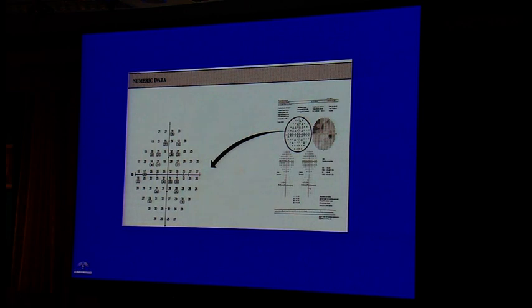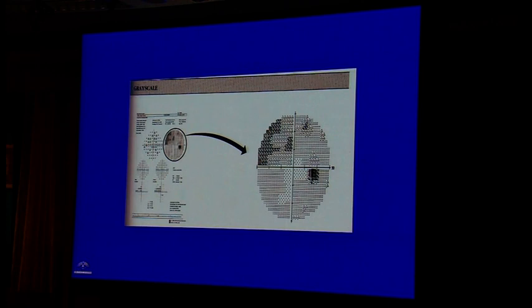Retinal sensitivity is best at the fovea, measured at around 32 dB, and declines towards the periphery. The grayscale interpolates the raw numeric data to map areas where the visual field appears defective, giving a rough visual representation of where the field is normal versus defective and allowing you to gauge the pattern of visual field loss.